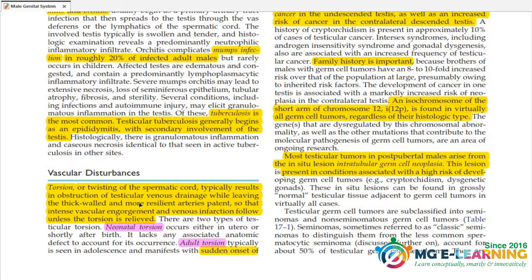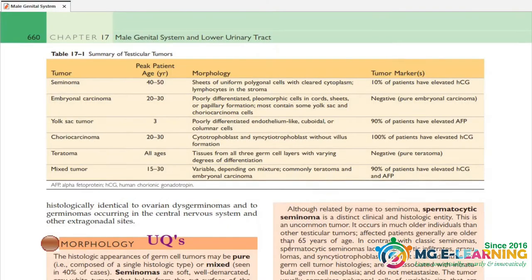Topics include vascular disturbances and Leydig cell tumors. The summary of testicular tumors is very important. For Seminoma and Embryonal Carcinoma, focus on age group, morphology, and tumor markers — elevated markers are very important to detect.